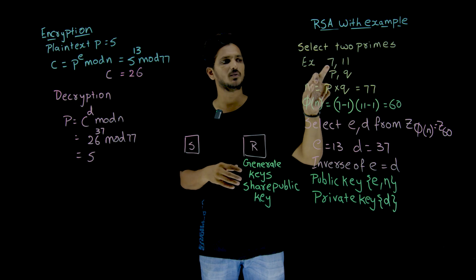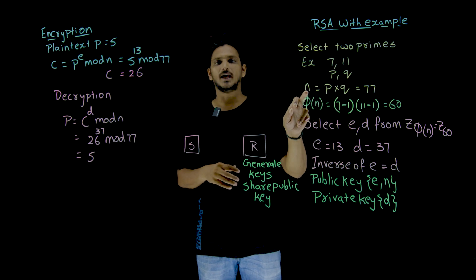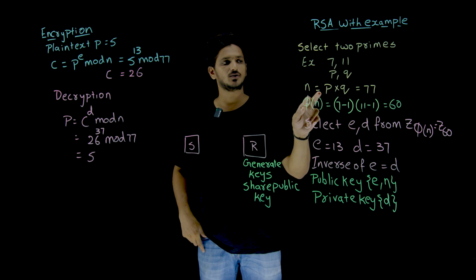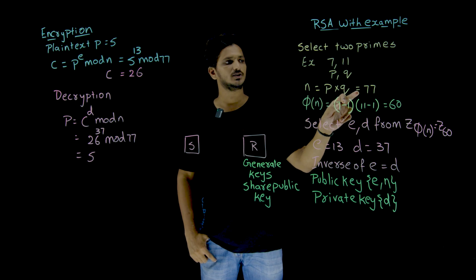Now by selecting the prime numbers P and Q, we have to find n. n is equal to P multiplied by Q, that is equal to 77.